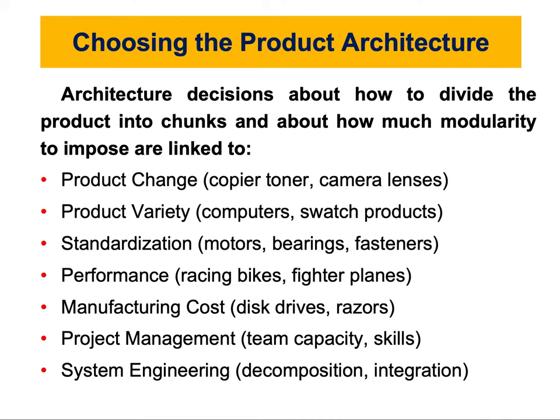For example, computers come in many varieties, but they share a standard motherboard and standard chunks that you build upon. Similarly, Swatch watches have many varieties, but when you break them down they consist of components and chunks that can be replaced. Swatch products are much more modular than integral, because each part can be replaced on its own.